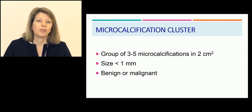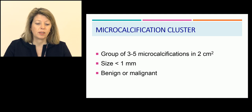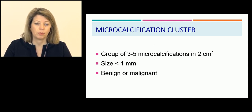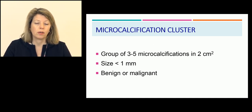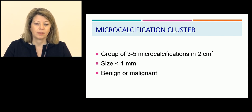The definition of a microcalcification cluster is quite simple: it's a group of three to five microcalcifications within two square centimeters. The size of these calcifications is lower than one millimeter, and a cluster microcalcification could be benign or malignant.